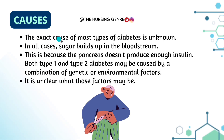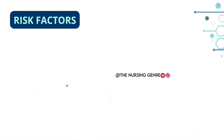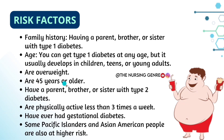The exact cause of most types of diabetes is unknown. In all cases, sugars build up in the bloodstream because the pancreas doesn't produce enough insulin. Both type 1 and type 2 diabetes may be caused by a combination of genetic or environmental factors, though it is unclear what those specific factors may be.